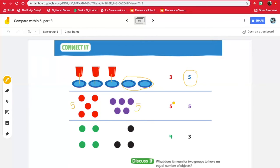There are also five purple dots. I'm gonna circle both numbers because they are the same amount. They are both equal, which means the same amount.